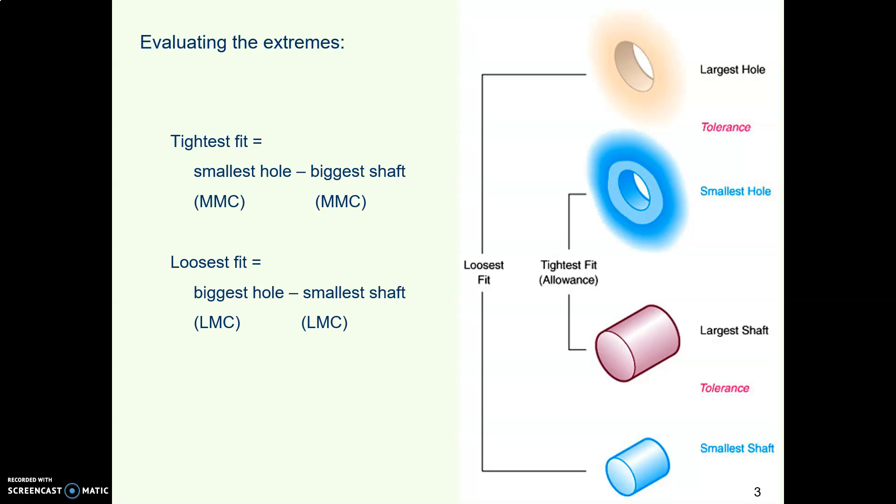So when we're thinking about clearances and fits, the tightest fit we will ever have is the smallest hole and the biggest shaft. You can probably picture that. In other words, MMC, maximum material condition, gives you the tightest fit. So the maximum shaft size, the smallest hole size, so the part has the heaviest material. That gives you the tightest fit.